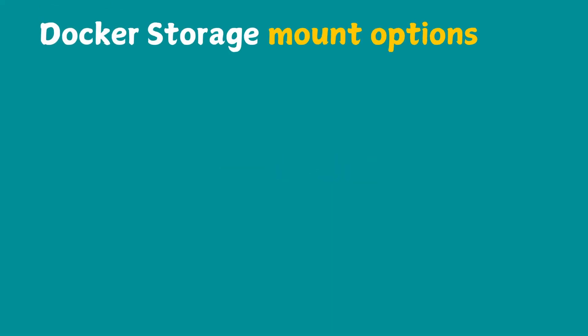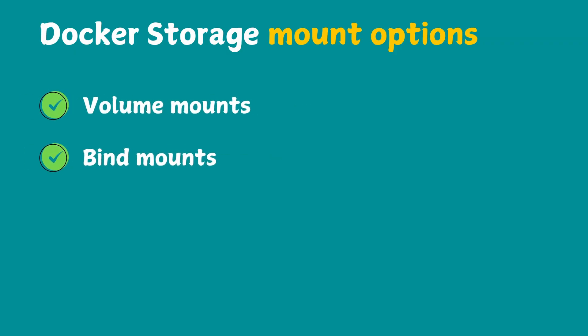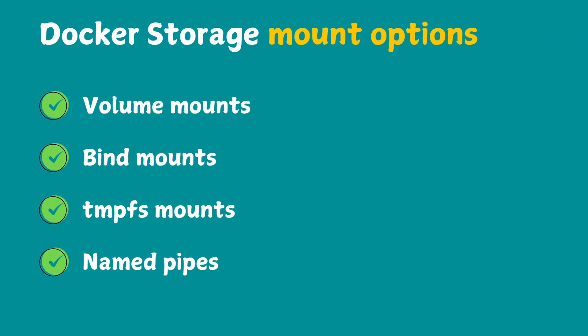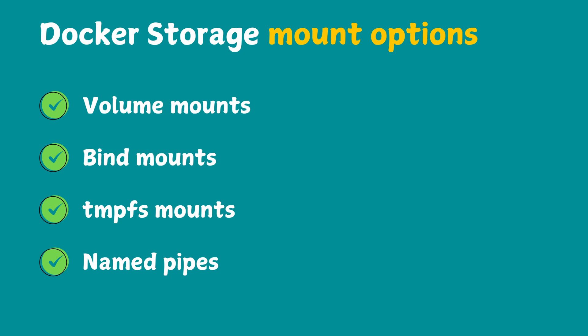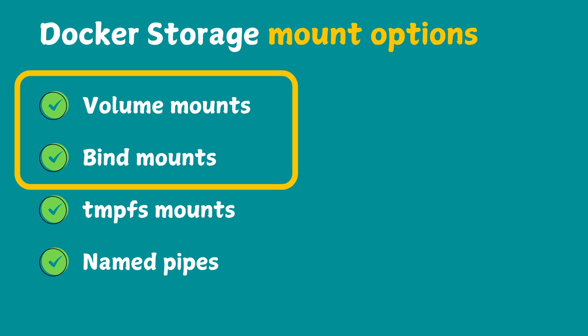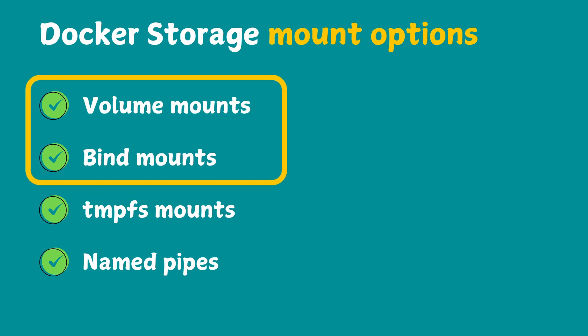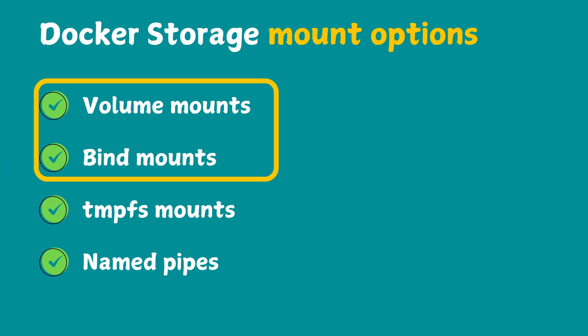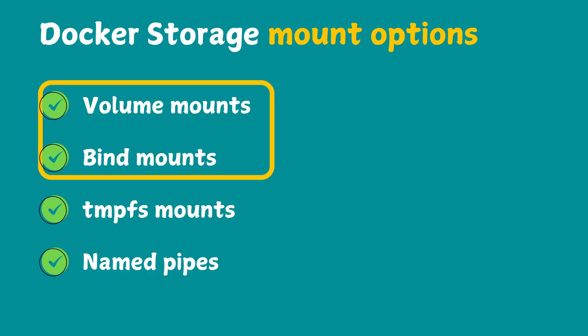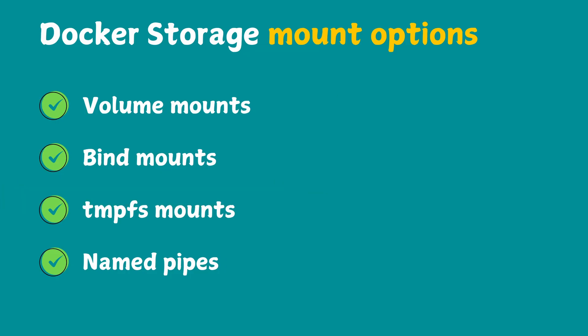Docker provides four storage options: volume mount, bind mount, TMPFS mount, and named pipes. We will be seeing volume mount and bind mount today. Mount means attaching - we are attaching a file system to the container.